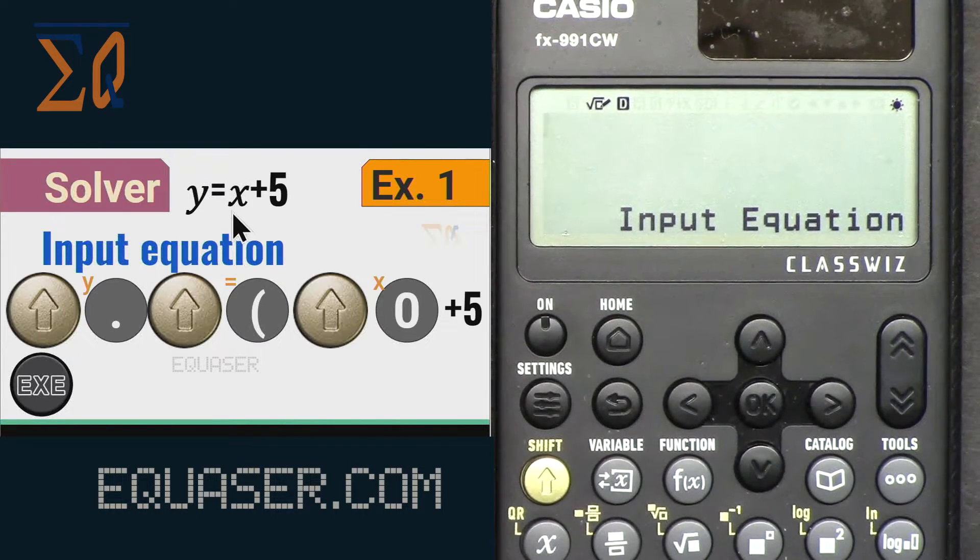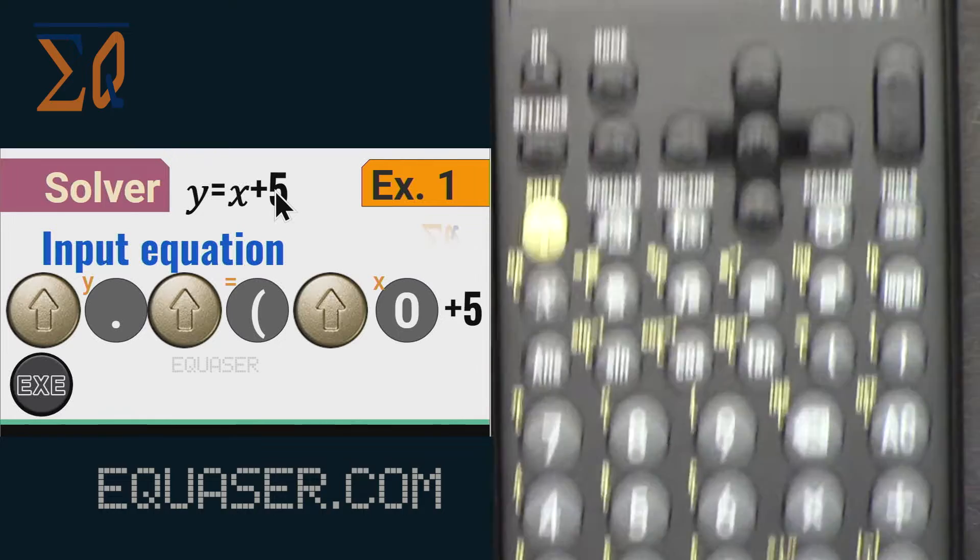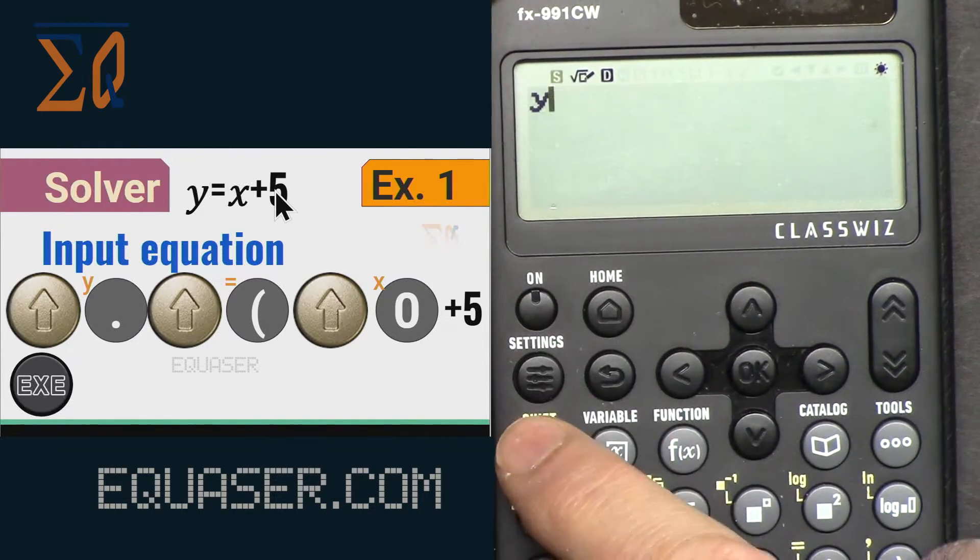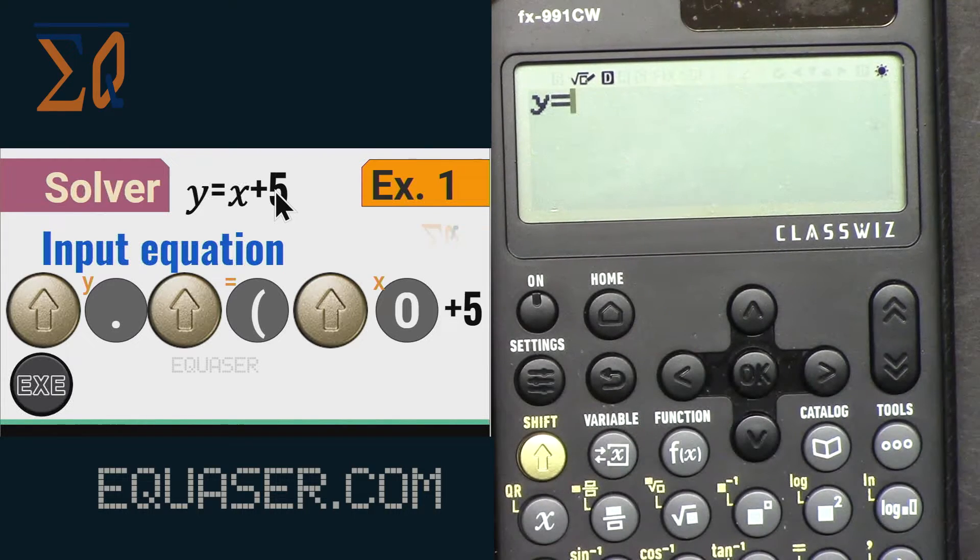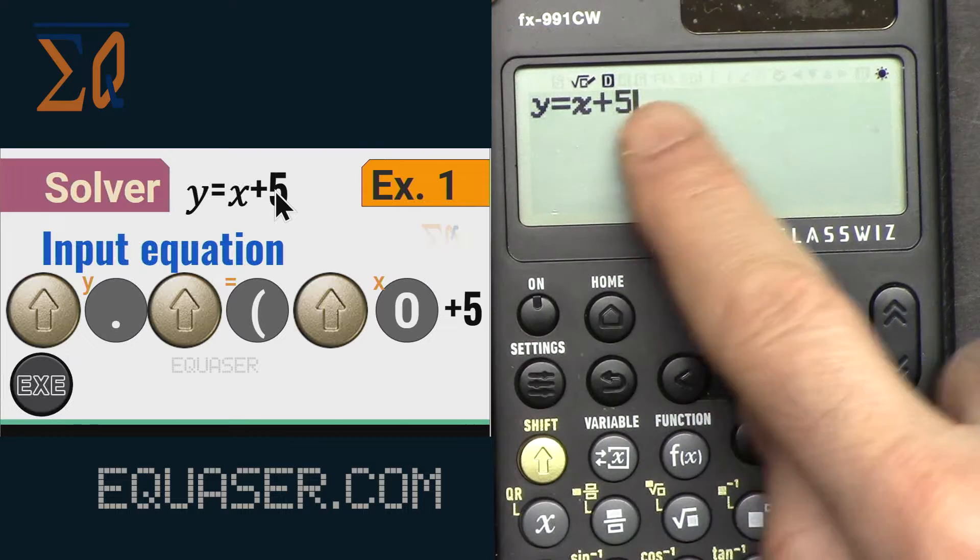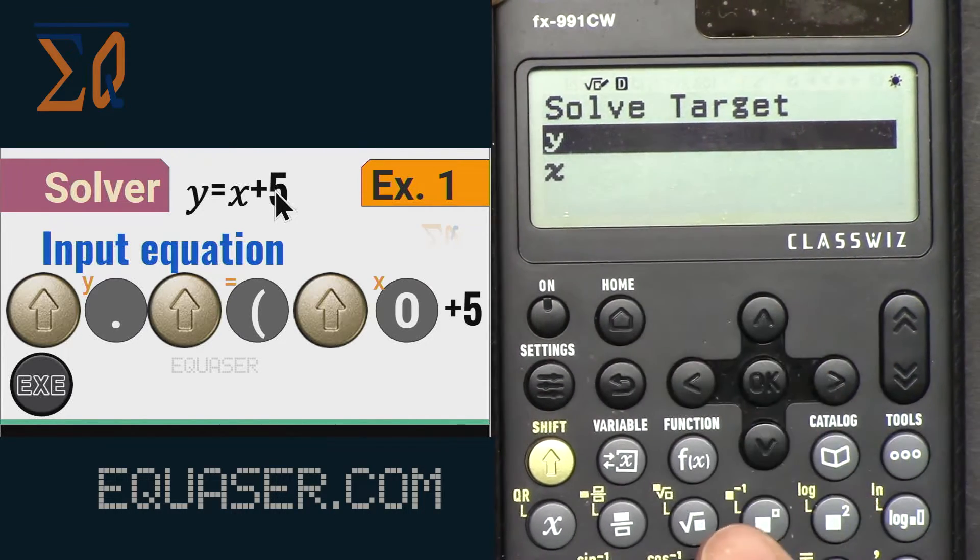Now to input the equation y equals x plus 5, I'm pressing shift and then y here, and then alpha, this equal, alpha x plus 5, and then press equal sign. When I press equal sign it asks for solve target.